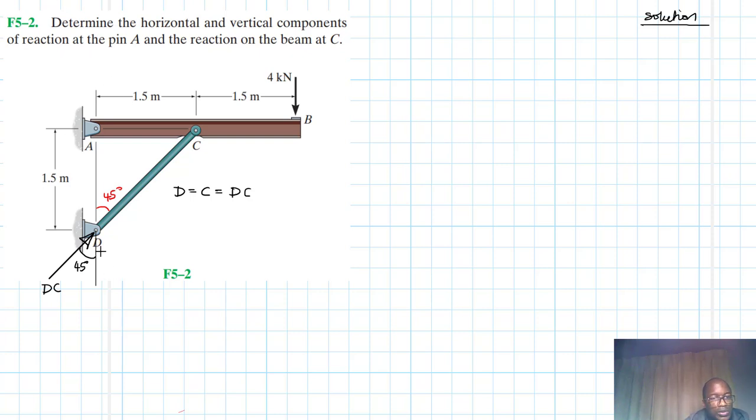Let me use blue. So we are going to have one component like so there. And this component is DC cos 45. And then we'll have another component in this direction. This one is DC sin 45.